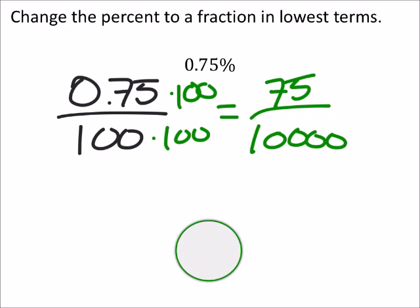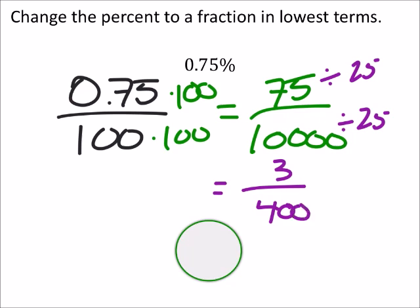Yeah, that's good. And we can simplify from there. We can divide both of these by 25, it looks like, so that would give us 3 over 400.